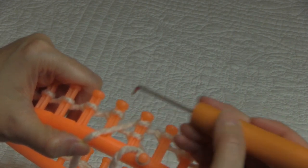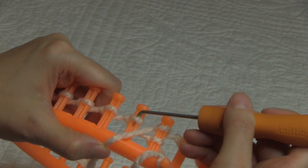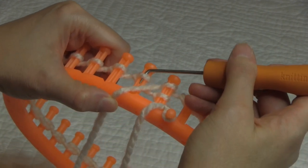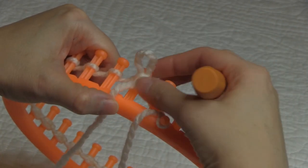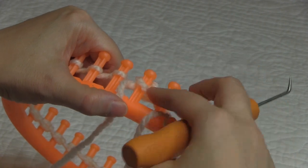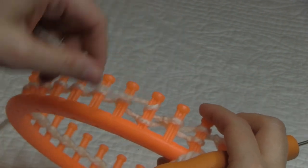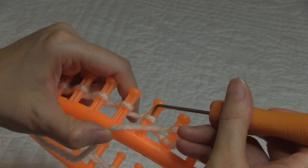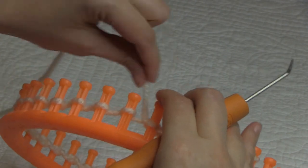To purl, we're going to take our hook and we're going to bring it underneath the loop that is on the peg. And we are going to scoop up our working yarn. We're going to take this old loop off the peg and put the new loop on and gently pull. So e-wrap for our knit stitch and purl. And I'm just going to continue this all around.